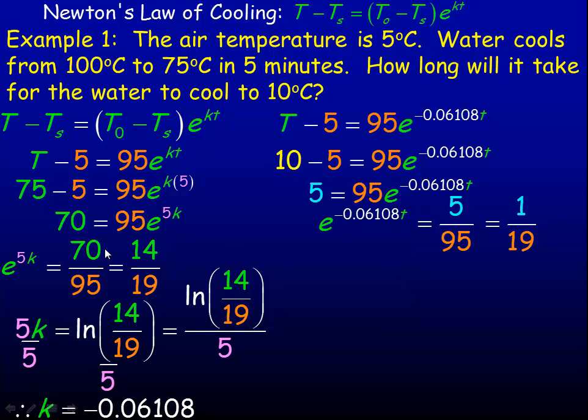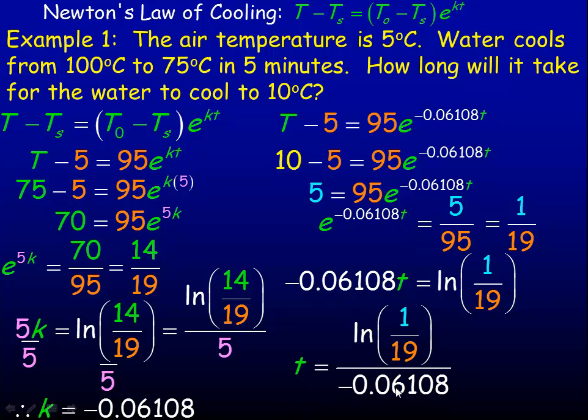Just like when we solved for K, the exponent equals the natural logarithm. So negative 0.06108T equals ln(1/19). To find T, we divide by negative 0.06108. This gives us about 48.2 minutes. It takes just over 48 minutes for the water to cool from 100 degrees to 10 degrees.